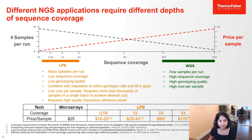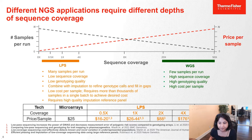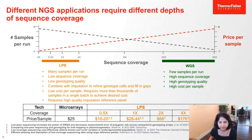Different applications require different depths of coverage. At one end of the spectrum, low-pass sequencing multiplexes many samples to achieve 0.1x–4x coverage, resulting in low cost per sample but reduced genotyping quality. At the other end, deep whole genome sequencing at 20x delivers very high-confidence genotyping calls at a higher cost per sample. The cost of Axiom microarrays falls somewhere between 0.5x and 1x low-pass sequencing and whole genome sequencing.